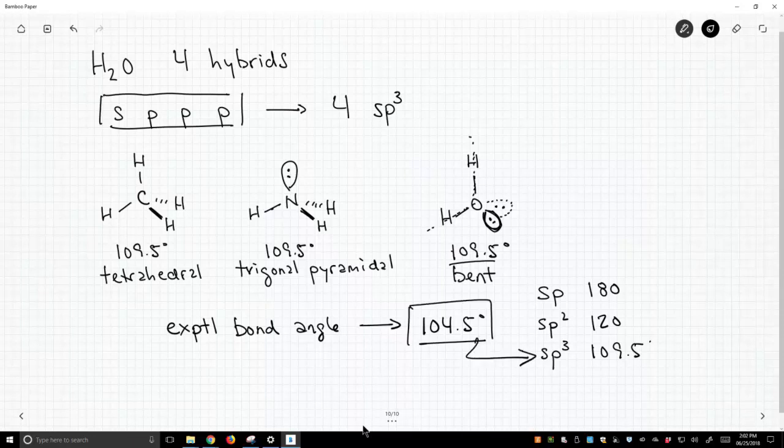And the experimental value is 104.5. Therefore, we'd say, oops, that's a match best with the sp3 hybridization. And therefore, we say the best hybridization picture for water is indeed sp3 hybridization. That's the same conclusion we came with ammonia.